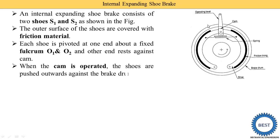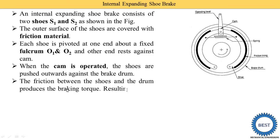When the cam is operated using the operating lever, the shoes are pushed against the brake drum. The cam is operated and it pushes the shoes towards the brake drum. The brake drum and the shoe come in contact and the rotating wheels or rotating members are stopped. The friction between the shoe and the drum produces the braking torque, which reduces the speed of the drum until the drum is stopped.